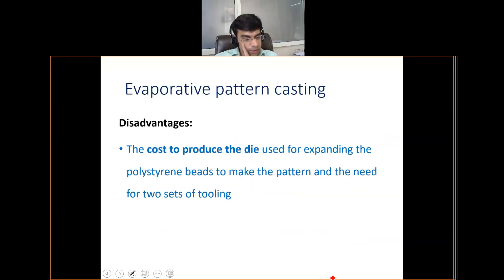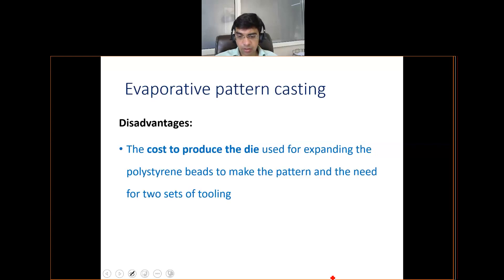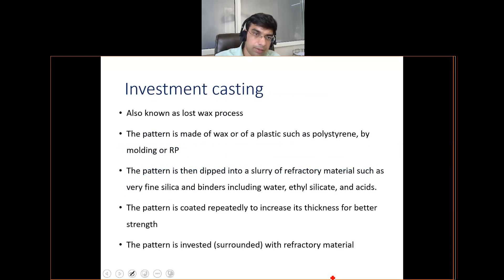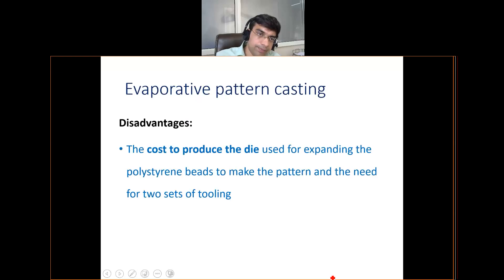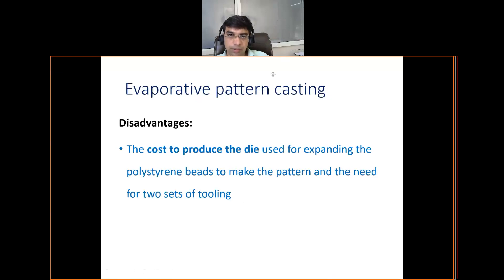Advantages of evaporative pattern casting include: no parting lines, cores, or separate risers needed; inexpensive flasks; complex polystyrene patterns can be made easily; minimal cleaning and finishing required; and the process can be automated for economical production runs. A disadvantage is that creating the die to produce the polystyrene pattern increases the overall cost of the casting process. With this, today's lecture concludes and questions can be taken.